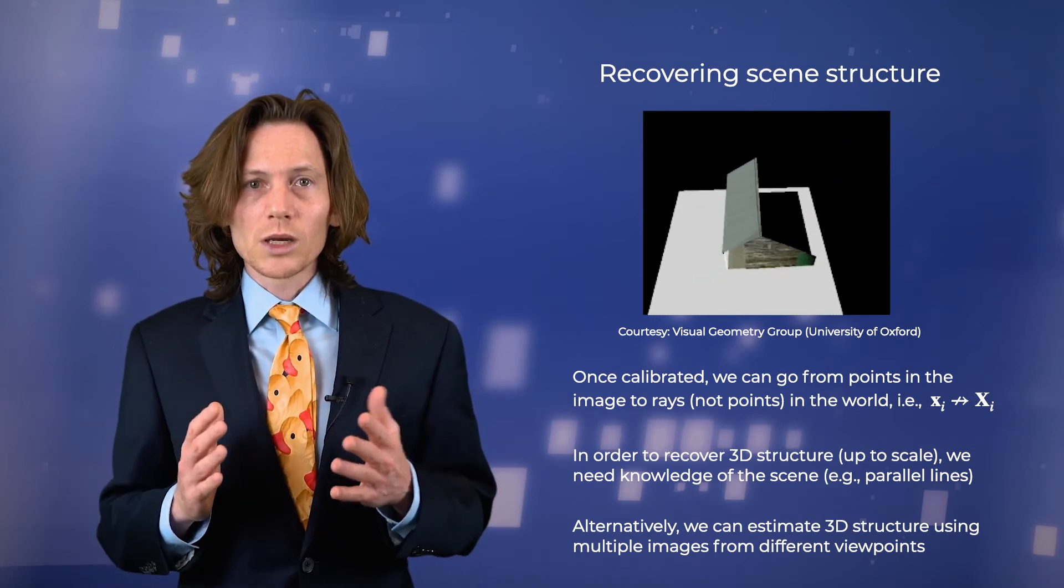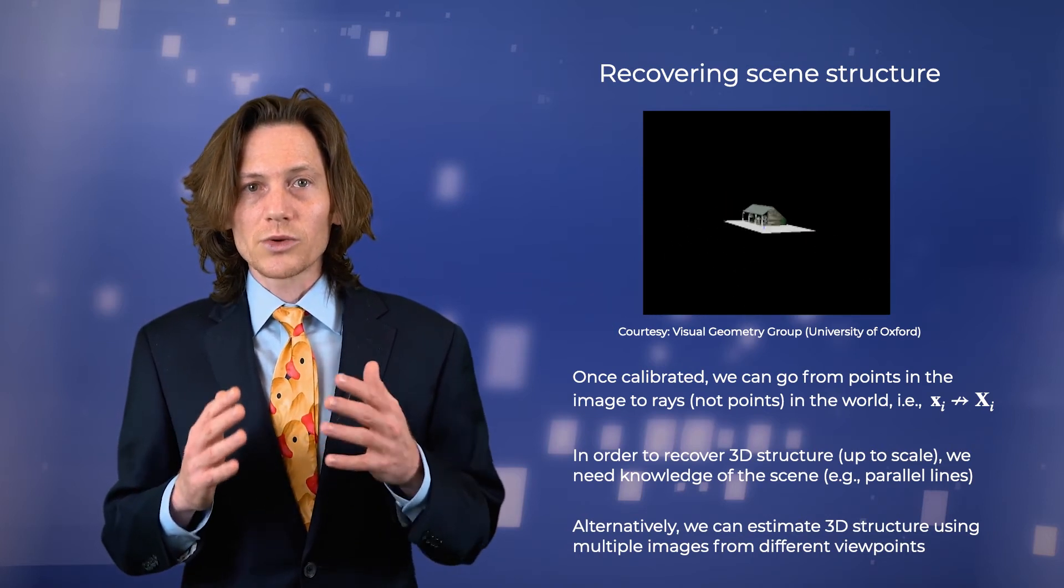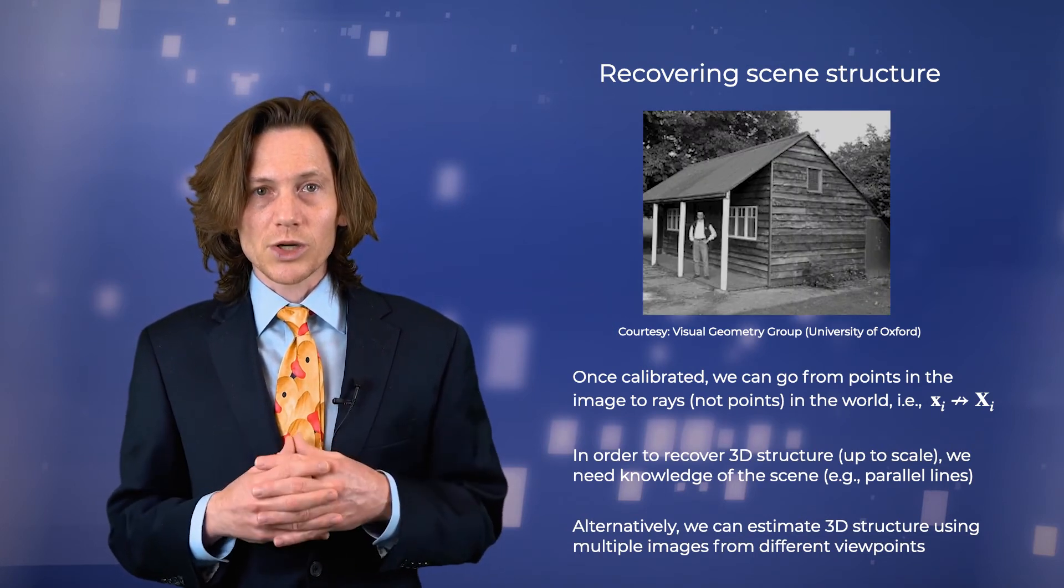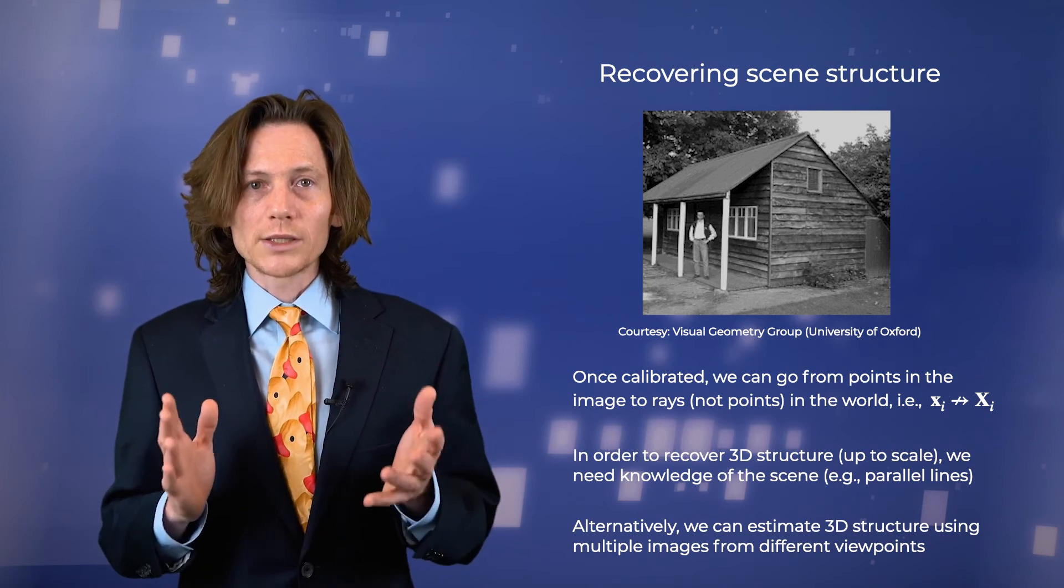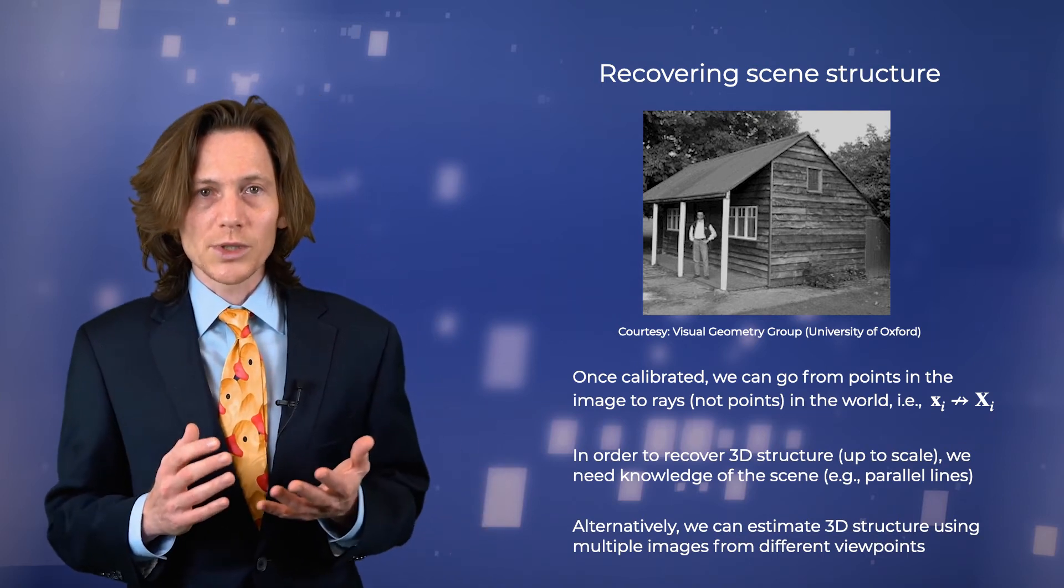Alternatively, we can move the camera around to image the scene from different viewpoints, and then triangulate the resulting 2D to 3D projections to estimate scene structure. Both approaches are widely used in computer vision and robotics as a means of reasoning over the 3D world based on two-dimensional images.